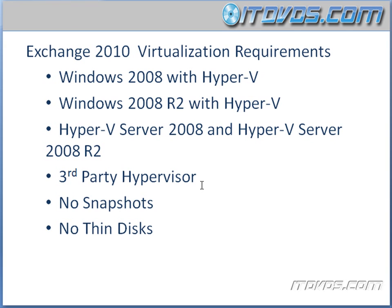We can install Exchange 2010 on a virtual machine. We can use Windows 2008 with Hyper-V, Windows 2008 R2 with Hyper-V, or Hyper-V Server 2008 and Hyper-V Server 2008 R2. We can't use something like Microsoft Virtual Server. We can use third-party hypervisors — some are supported, like VMware ESX. You want to check Microsoft's website to see which ones are supported. The big thing about using virtual machines for Exchange 2010 is you can't use Snapshots with them, and you can't use ThinDiscs — at least they're not supported.